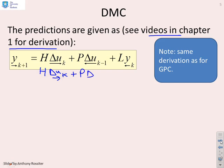Now I've been a bit naughty here, because I've used P for both, and perhaps I shouldn't have done, because they're actually different P's. But you'll notice the structure of the predictions for GPC and DMC are actually the same. But where are the differences? DMC has an L multiplying the past outputs, whereas GPC maybe has a Q, and these P's are different.